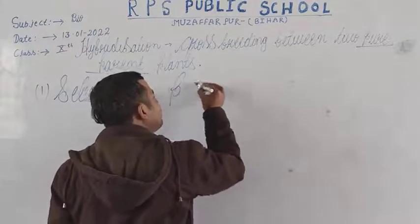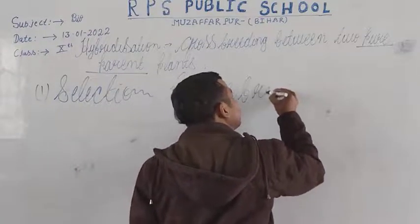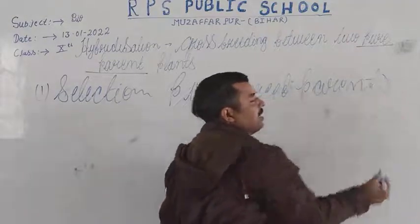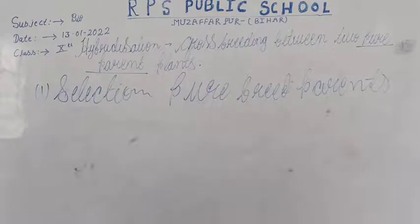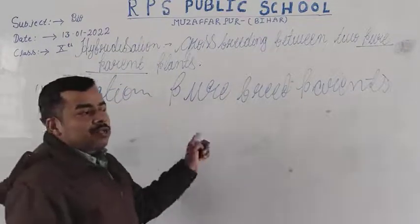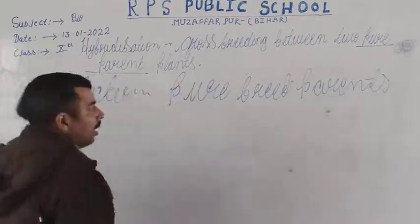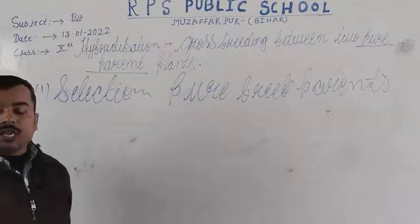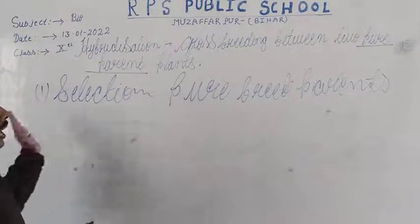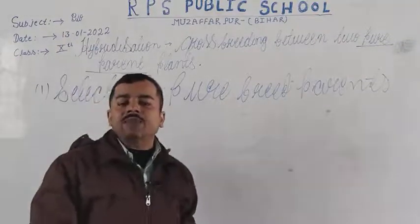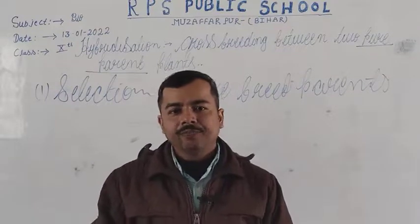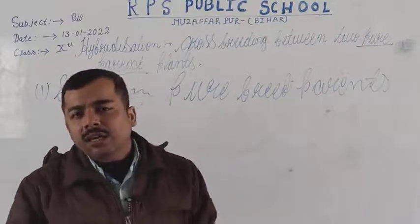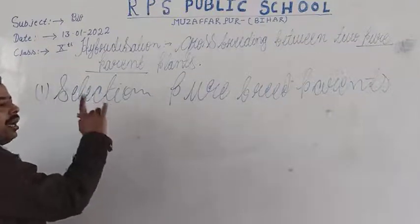We select pure breed parents having two different desired characters. These two pure parent plants carrying the desired characters should have another feature: when we choose these plants, the reproductive parts must be quite large and easily detectable.